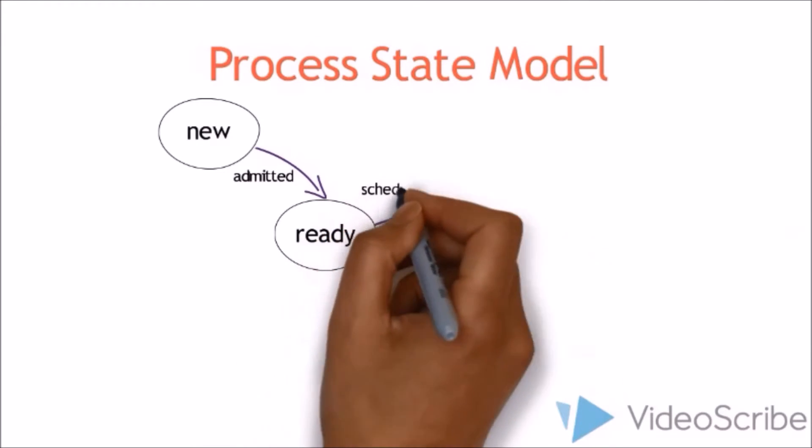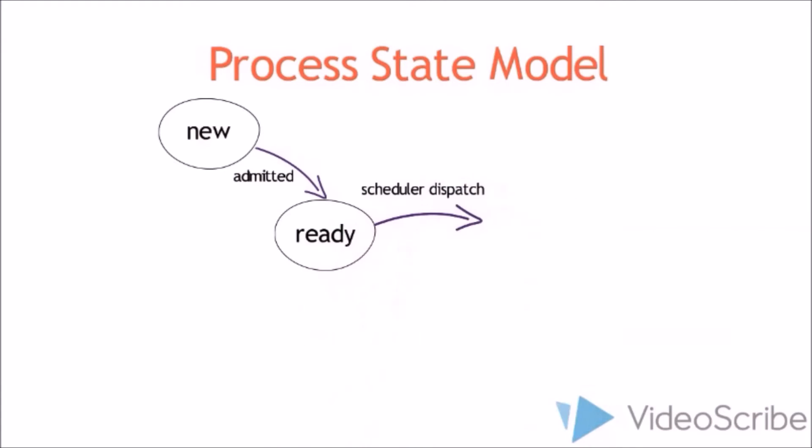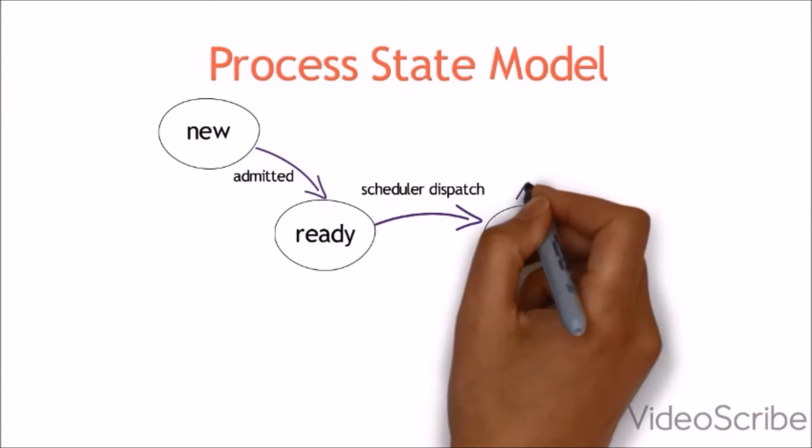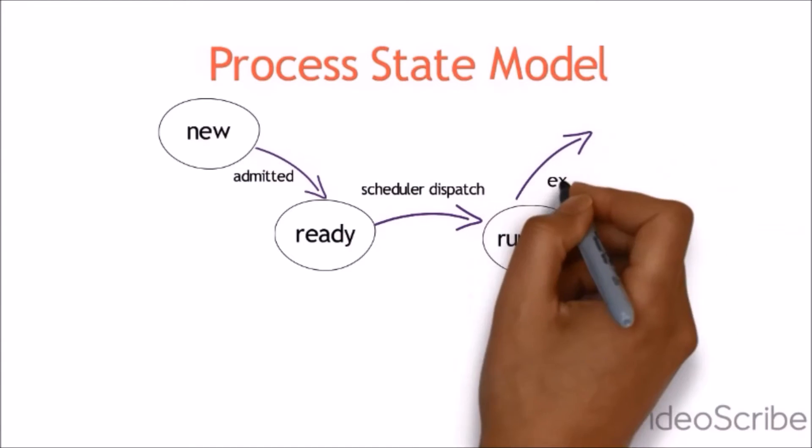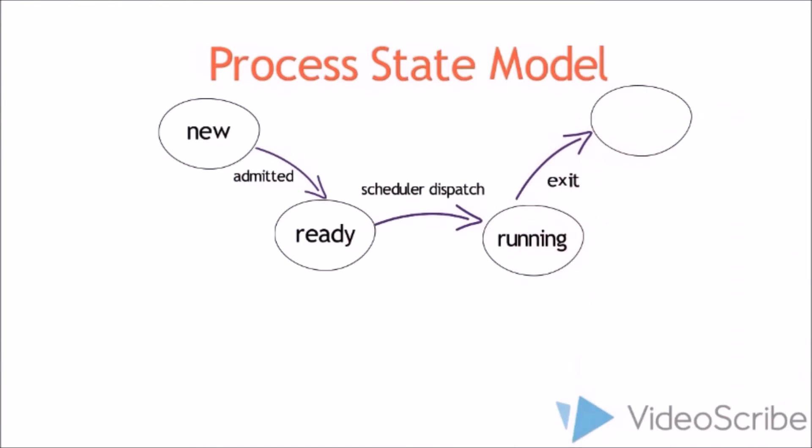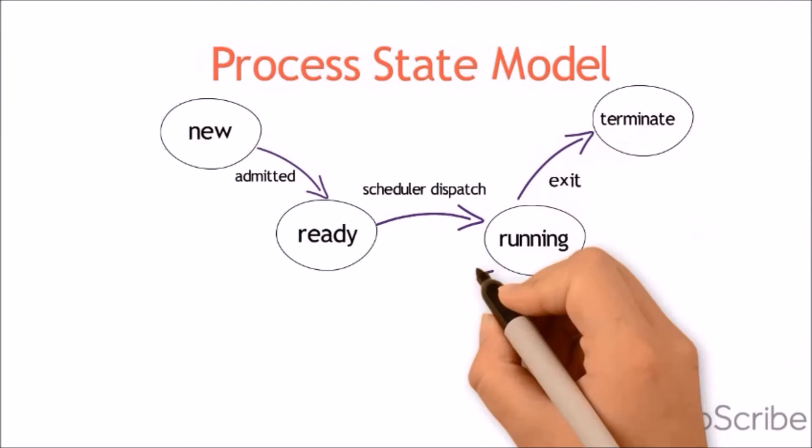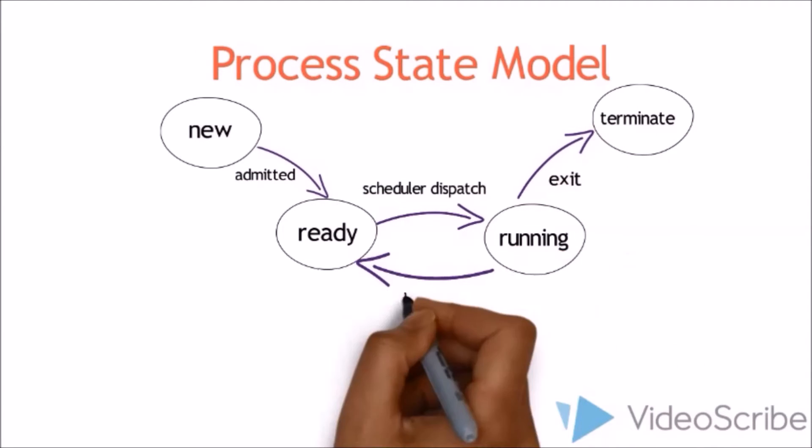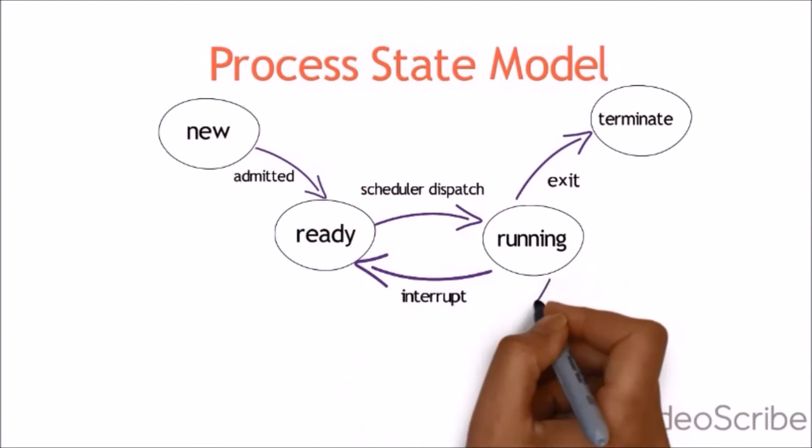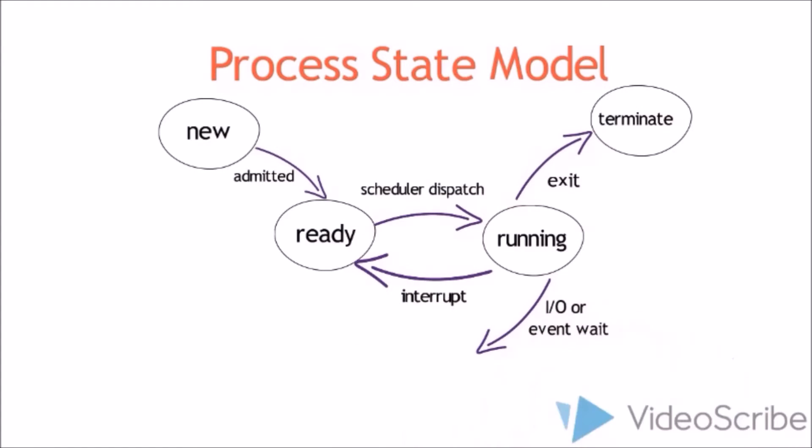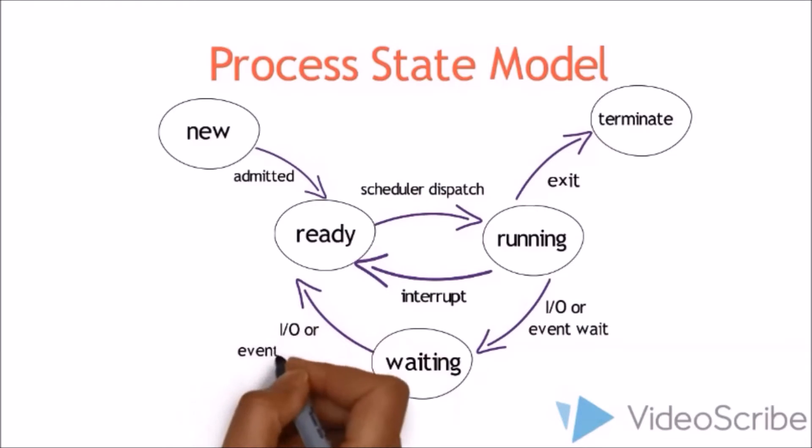Process state models. New processes that are created will be admitted to a ready state, then dispatched to start running. The dispatcher will select the process from the ready queue for allocating it to CPU or processor. After completing the task, this process will exit and terminate. But if there is an interrupt while running the process, it can go back to the ready state. Also, if there are I/O operations waiting for the process, it will be in the waiting state.